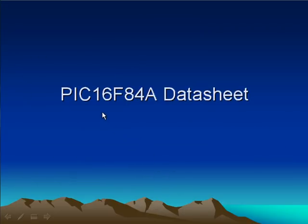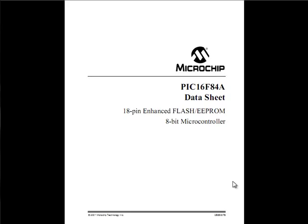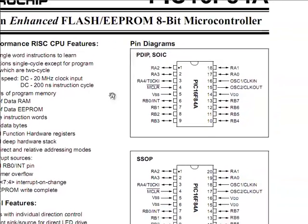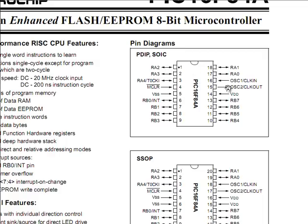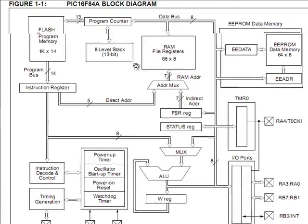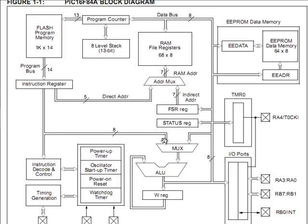Now let's look at the datasheet of the PIC16F84A microcontroller. You can download this datasheet for free from the Microchip website. Here you can see the pins and the structure of this microcontroller — it has 18 pins. Some pins are used to program the microcontroller and to supply voltage, and some are dedicated as ports. We use these ports to get outputs from and supply inputs to the microcontroller. Here you can also see the internal block diagram showing how the important components are integrated.